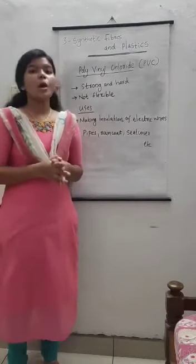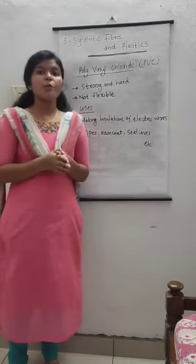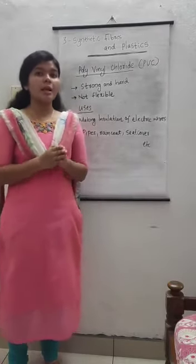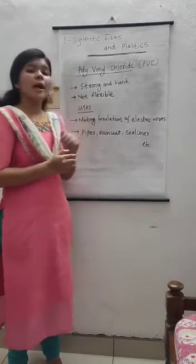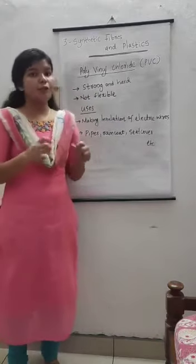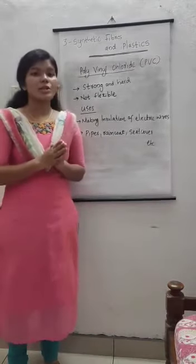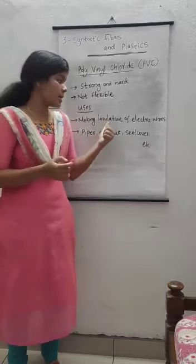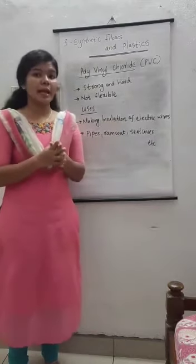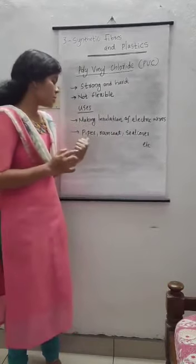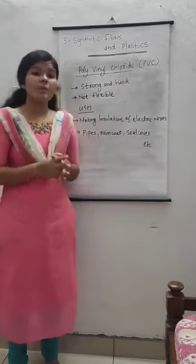The next one is polyvinyl chloride, also known as PVC. You may have heard about PVC pipes. These are strong and hard and not flexible. PVC is used for making insulation of electric wires — insulation means the covering of electric wires — due to which you don't get a shock. It is also used for making pipes, raincoats, seed covers, etc.